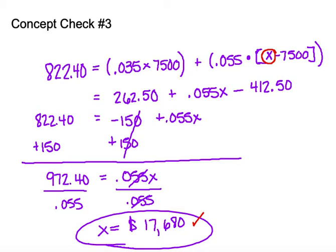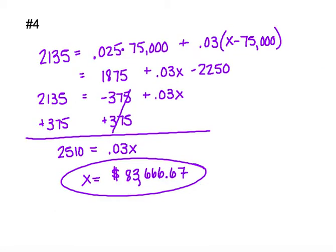If you're good, here is the solution to concept check 4. You can see that graduated commission rate: 2.5% of $75,000, and then 3% of what's left over $75,000. Going through the process of solving, the total sales would have been $83,666.67.